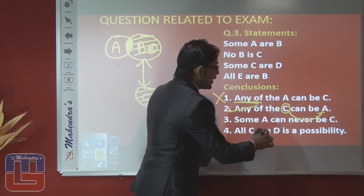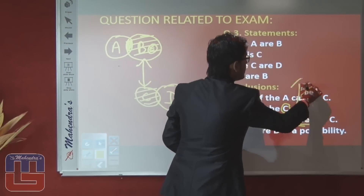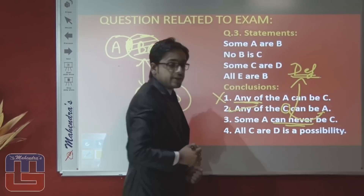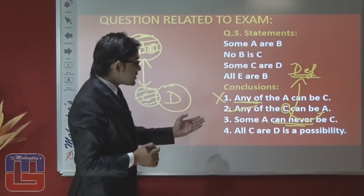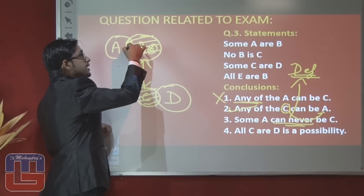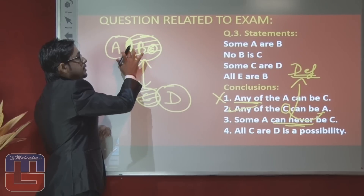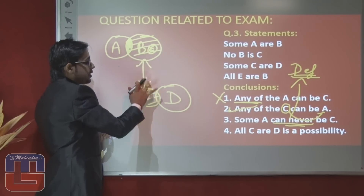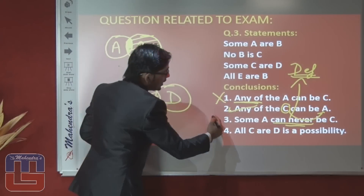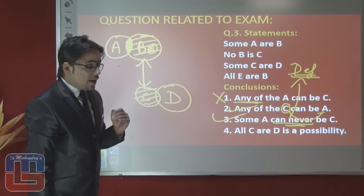Conclusion 3: 'Some A can never be C' — 'never' means definite case. We can conclude in definite manner that this area (some A) are not C; some A can never be C is definitely true.